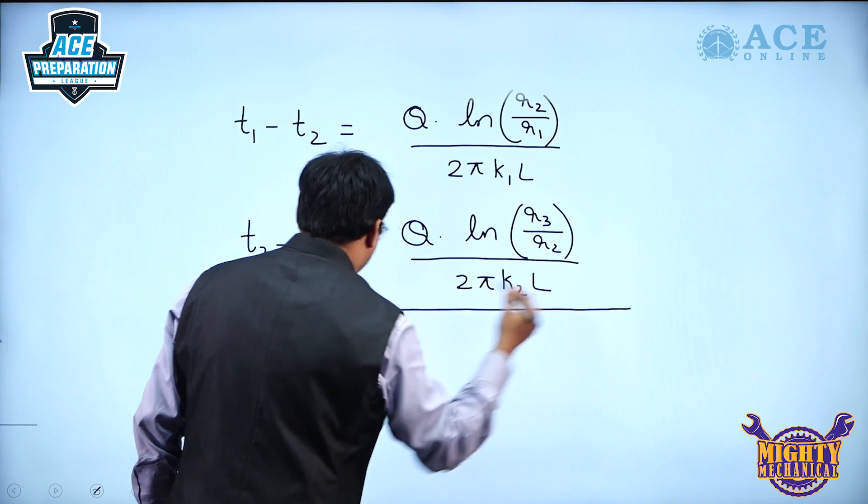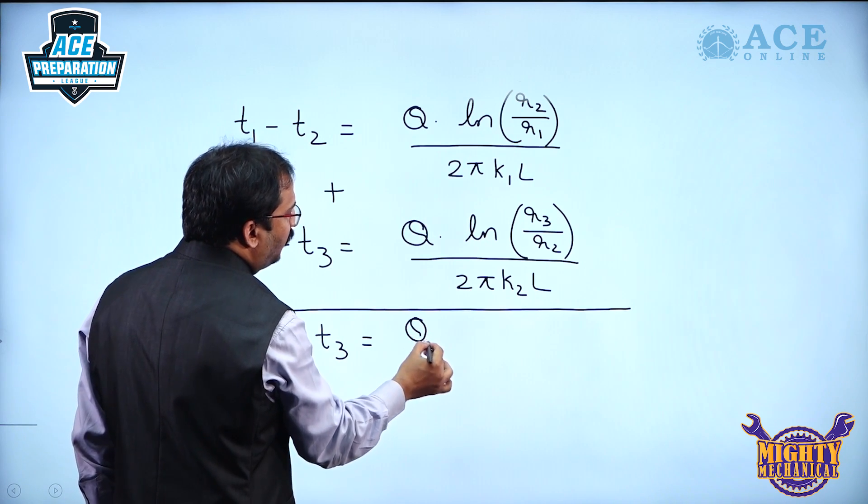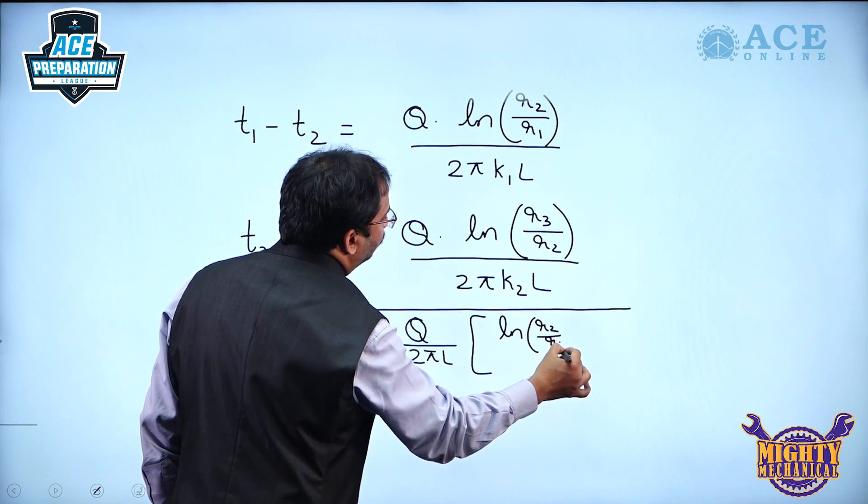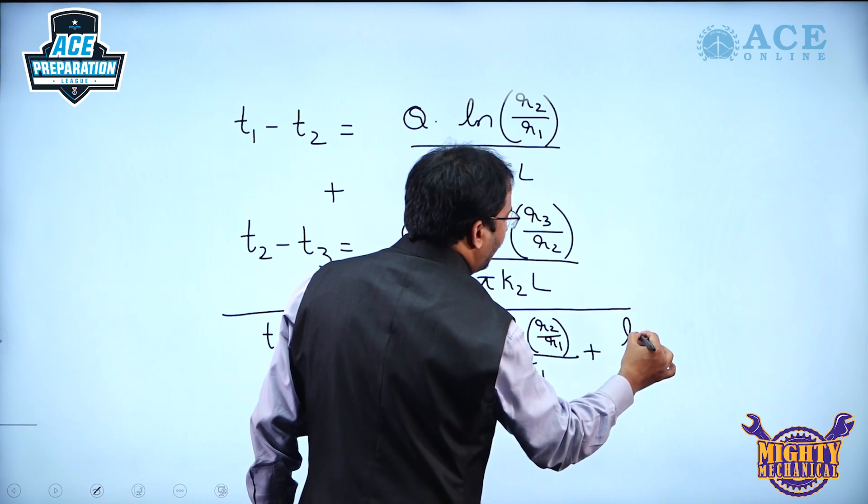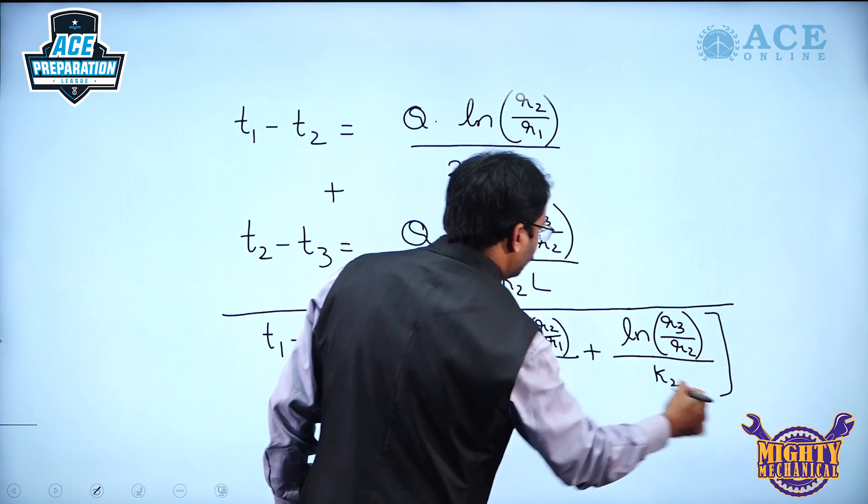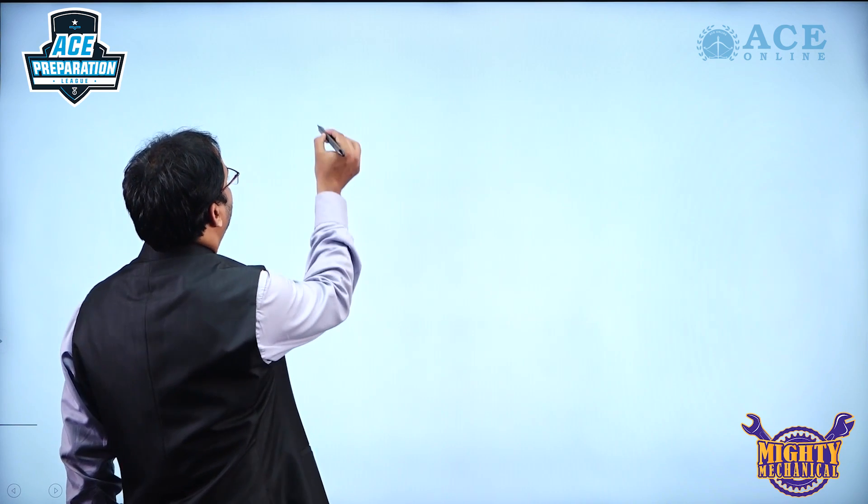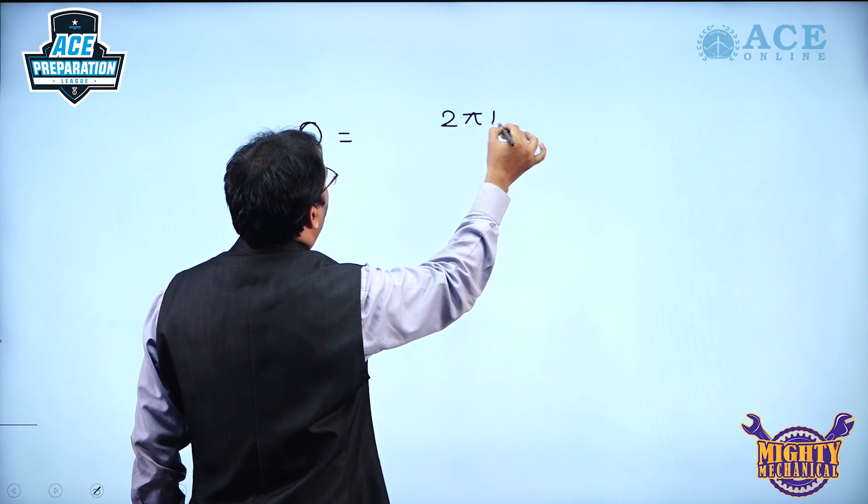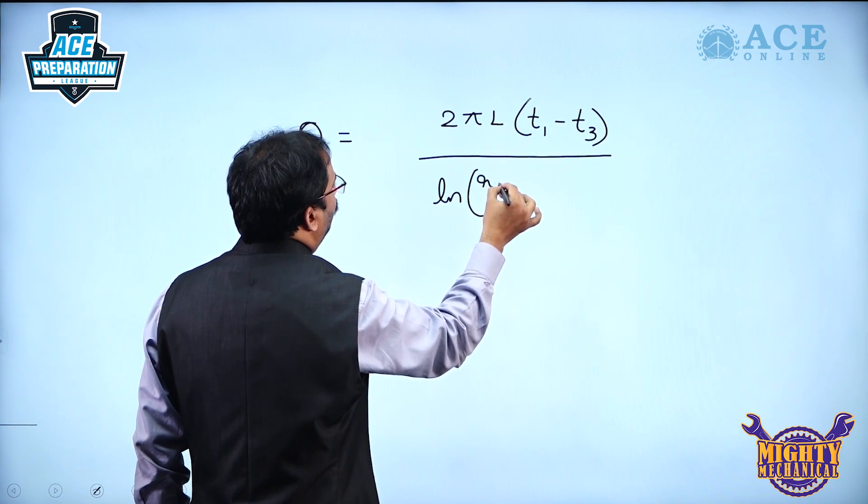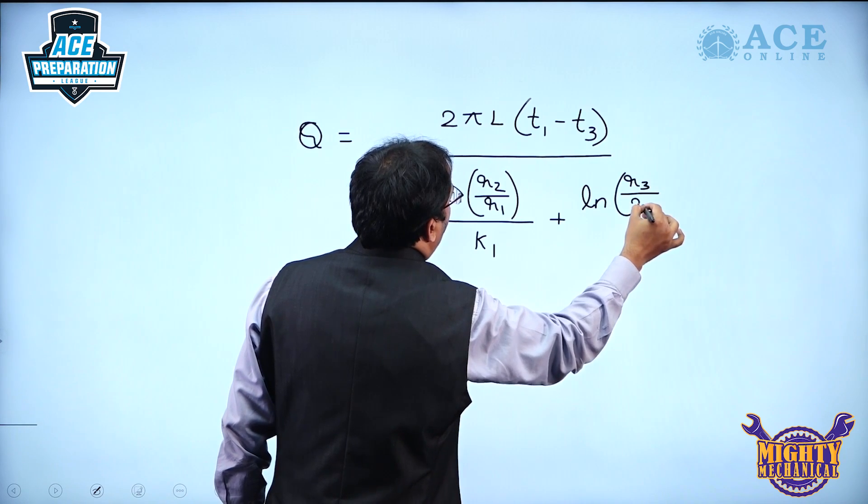Adding these two we get the overall temperature difference T1 minus T3. If you observe these two expressions, Q by 2πL is common, so if I take it outside: ln(R2/R1) by K1 plus ln(R3/R2) by K2. From this, Q heat transfer can be written as Q equals 2πL into overall temperature difference T1 minus T3 divided by ln(R2/R1)/K1 plus ln(R3/R2)/K2.